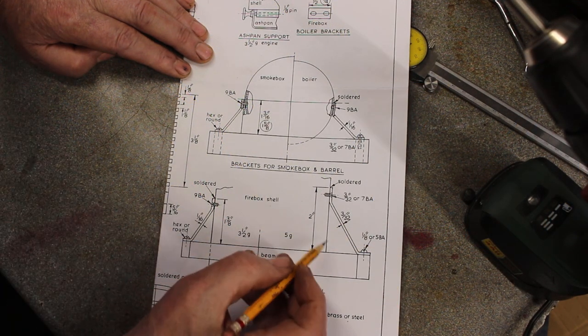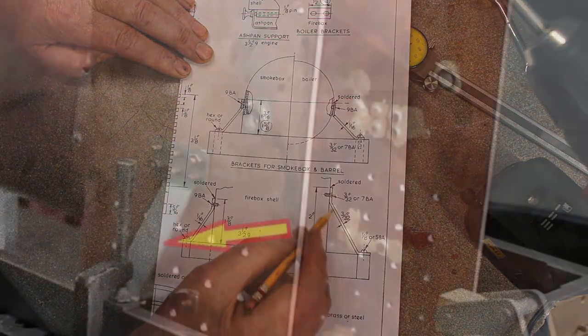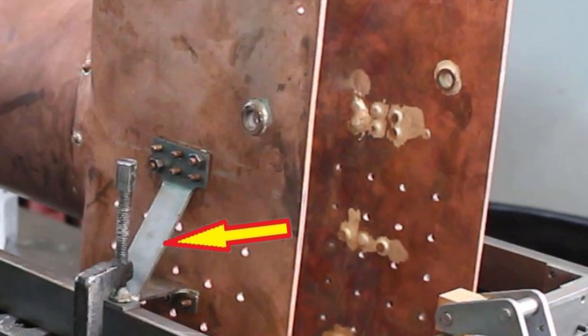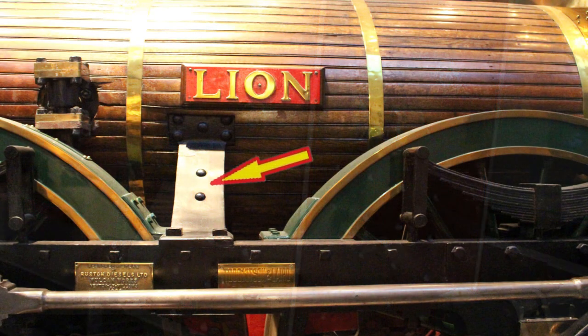I've already made the brackets for the firebox end, so this video is going to focus on making the brackets to attach to the boiler barrel.